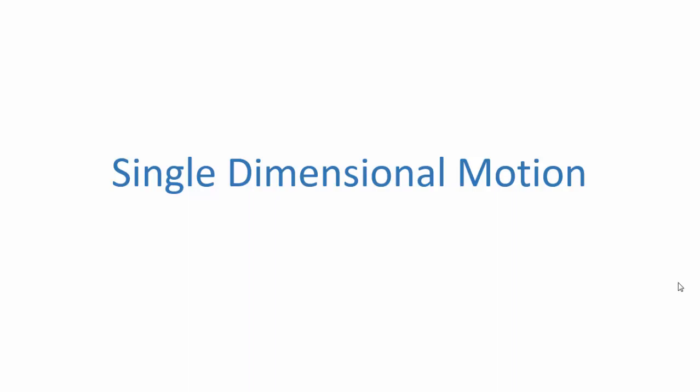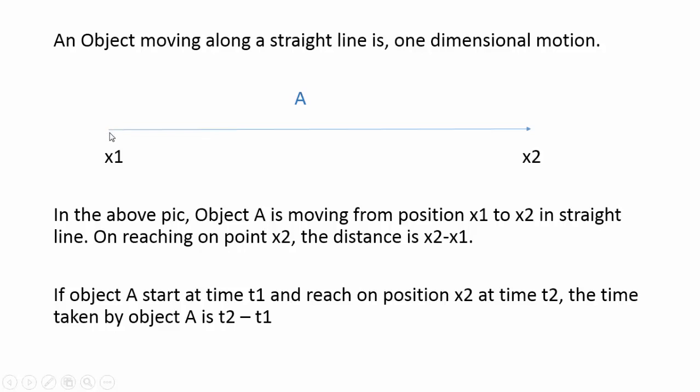Hello friends, in this video we will see what is single dimensional motion. Single dimensional motion is if an object moves from position x1 to x2 in one direction. This is called single dimensional motion.